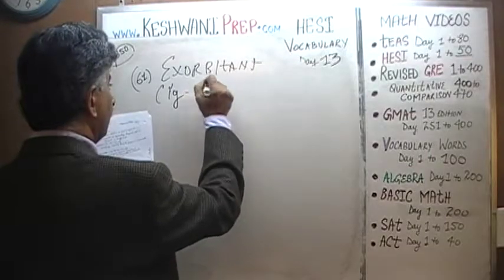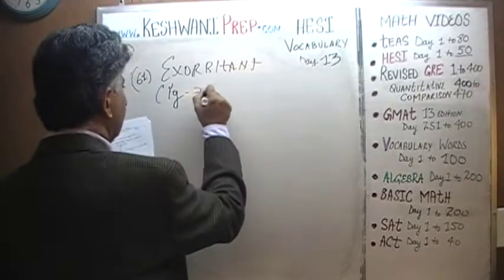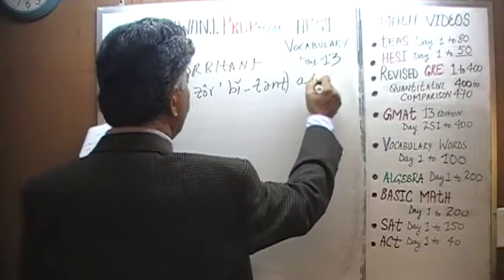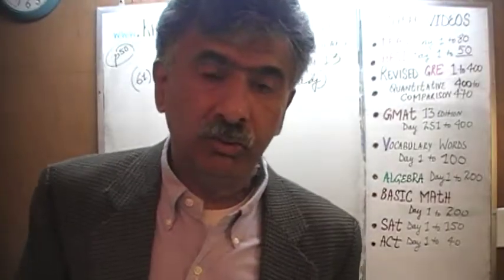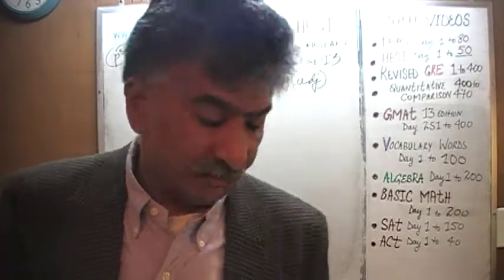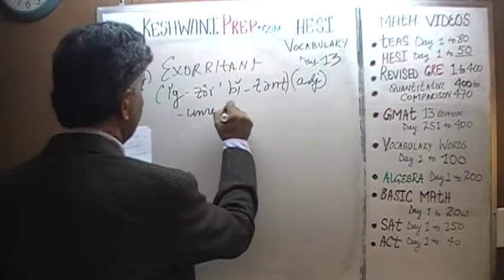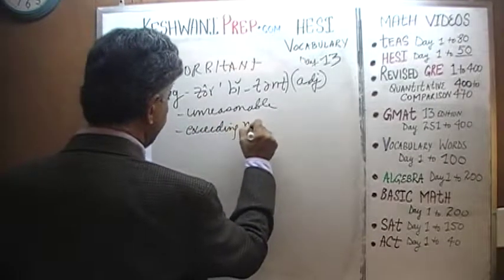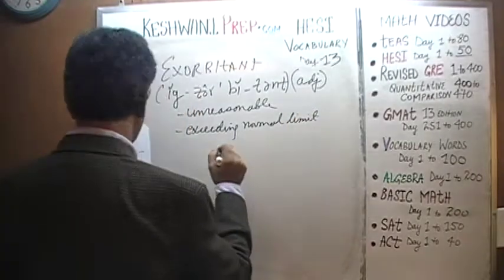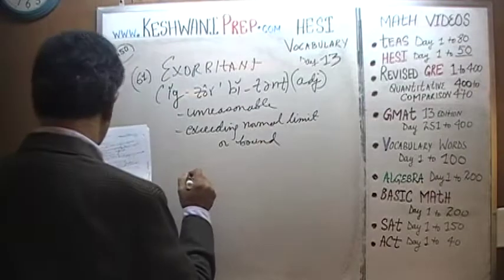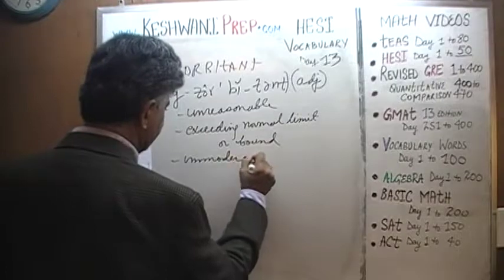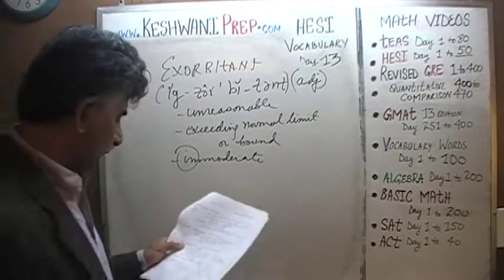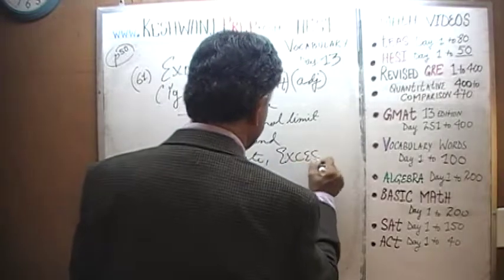The next word is exorbitant. Exorbitant means unreasonable — exceeding normal limits or bounds. It means immoderate; the antonym is moderate. Moderate means reasonable; exorbitant or immoderate means unreasonable, or finally, excessive.